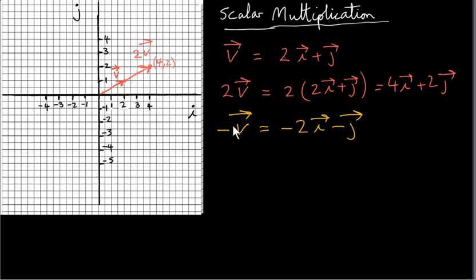If the scalar is minus 1, what we do is reverse the direction of v. If we multiply v by minus 1, we get minus 2i minus j, so we get minus 2i minus 1j. The head of the vector has coordinates minus 2, minus 1, so we get this vector here. Minus v is opposite in direction to plus v, but it has the same length as v.